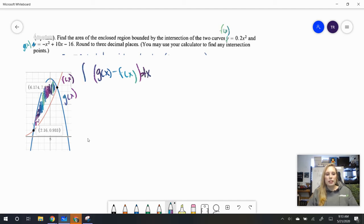When we have a dx, then we need to integrate, and we are going to integrate from those places where they intersect. So the first intersection point is 2.16 and the second intersection point is 6.174. So we are going to integrate from here to here.